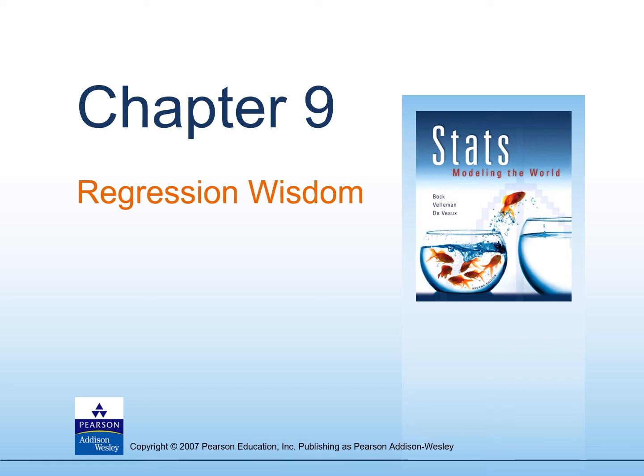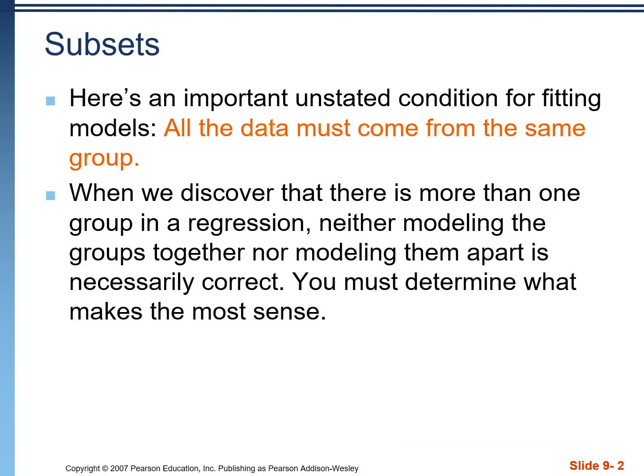Chapter nine is essentially an extension of chapter eight as we dive deeper into linear regression. Occasionally you'll be dealing with a regression problem that includes subsets of data. By subsets, I mean that there are groups of data within the scatterplot — maybe males and females, maybe children and adults. Usually you can see clusters within the data on the scatterplot, but not always. Look to the question to see if it's leading you towards separating the data into two parts and running the regression separately or keeping them together, because it does depend on the individual situation.